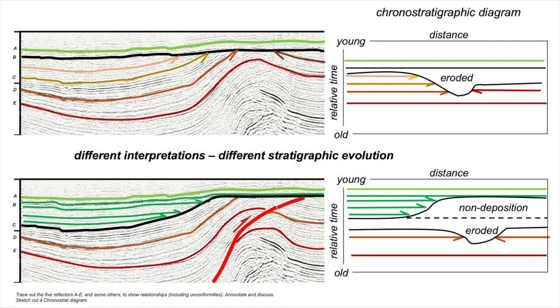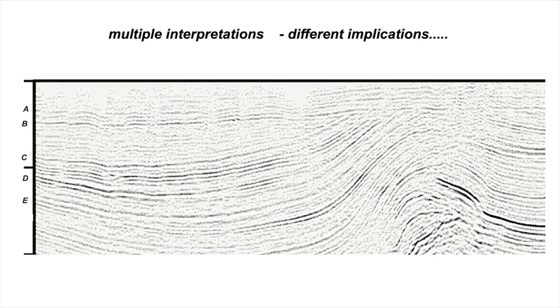But for now, we have to leave it here, unable to choose between these two competing interpretations. So to emphasize, individual seismic profiles can yield multiple interpretations and they carry different implications for the geological evolution. Here, we've just looked at two interpretations. There are others that we could have generated on this profile as well. This is simply an illustration of the multiple ways in which we can interpret individual seismic profiles.